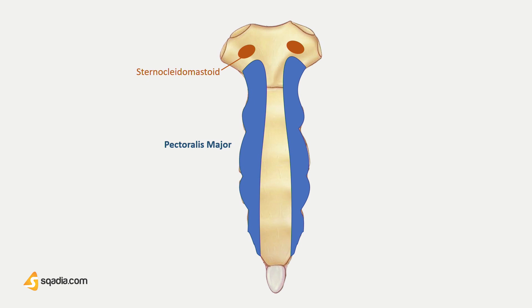Above it on both sides is the attachment of the anterior sternoclavicular ligament. The xiphoid would give attachments to the medial fibers of the rectus abdominis,